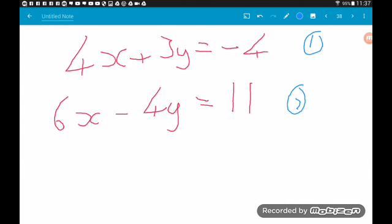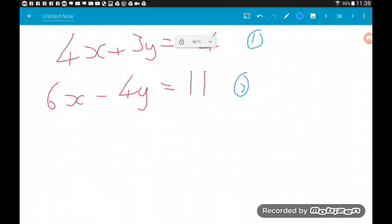So, the aim of the game here is to use elimination. Now, elimination means to eliminate one of the variables, either x or y, so that we are then left with an equation in terms of just one of them, which we can then solve, find the value of that variable, and substitute that back into one of these two equations to find the value of the other variable. Now, to be able to do this, we need to have the same amount of the same variable in both equations, which we don't at the moment. So, in equation 1 we've got 4x, in 2 we have 6x, in 1 we have 3y, in 2 we have -4y.